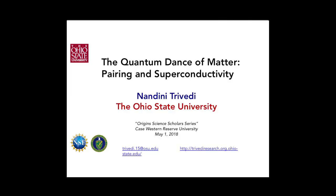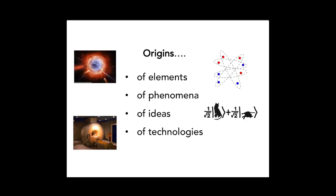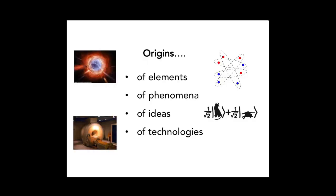I will tell you about the quantum dance of matter, pairing and superconductivity. This is the origin series, so it all began with the Big Bang 13.7 billion years ago when space and time were created. And within a fraction of the first second, electrons and quarks materialized and these went on to form the first atoms, hydrogen and helium. These powered the stars, and went on to fuse and make other atoms like carbon, nitrogen and oxygen, which formed essentially the elements of life.